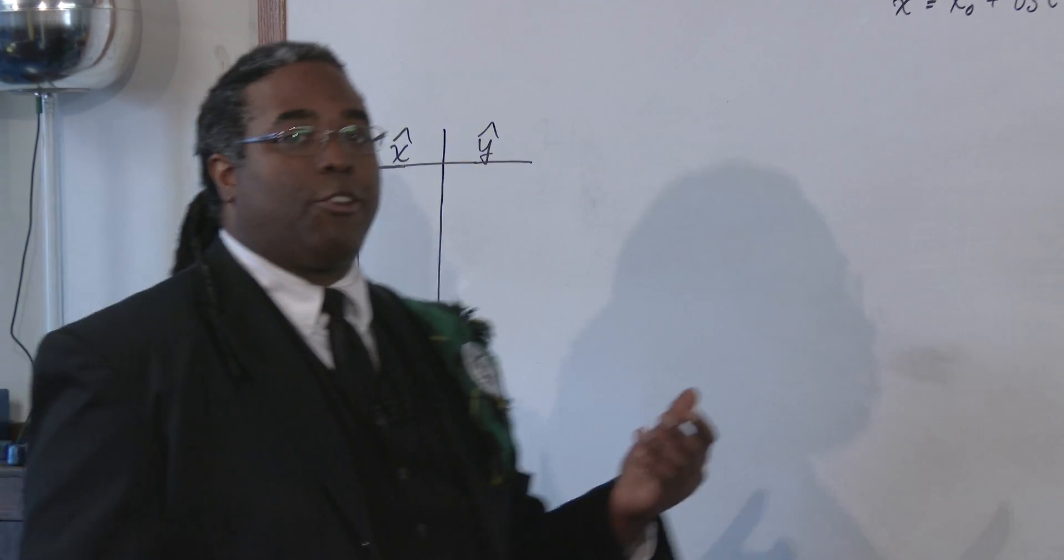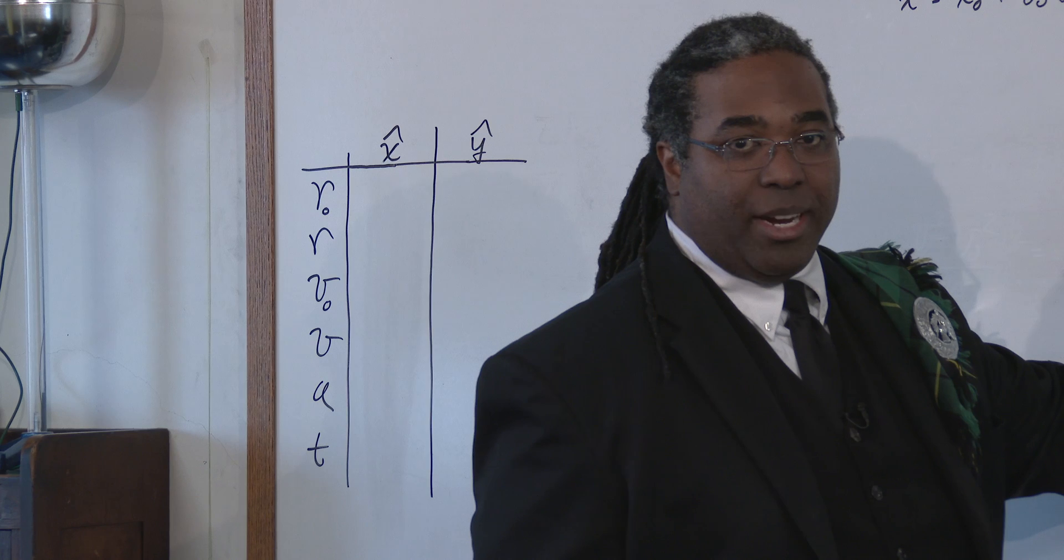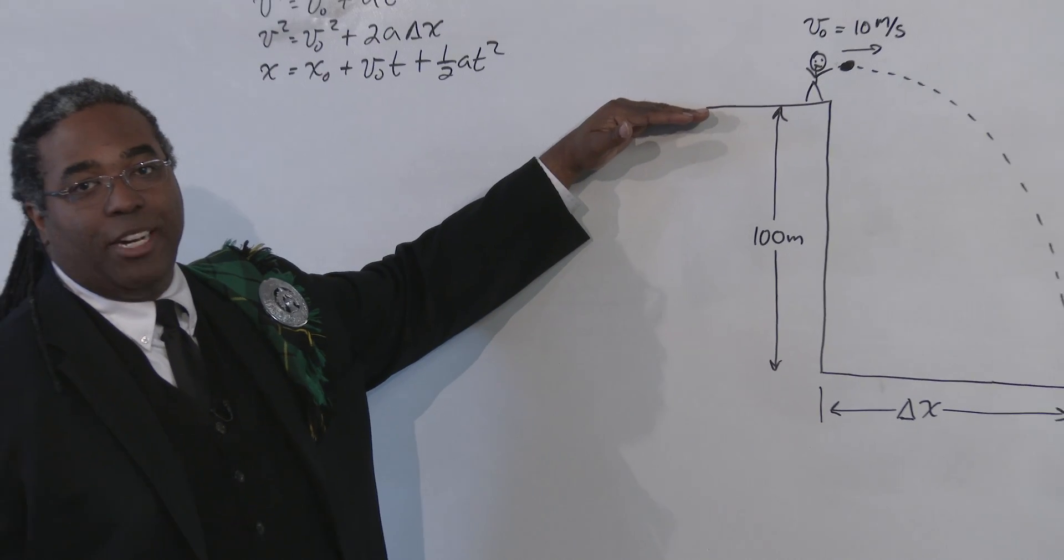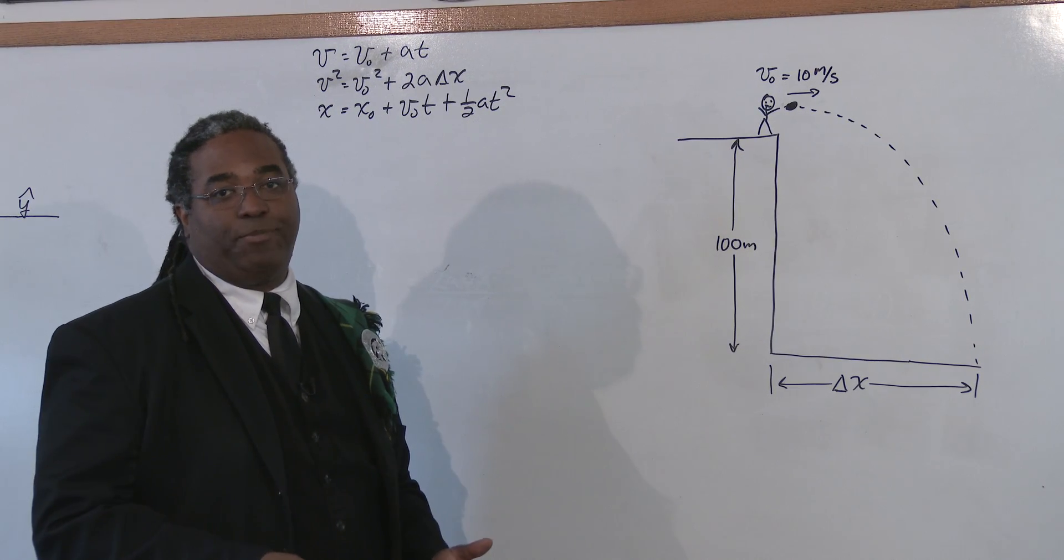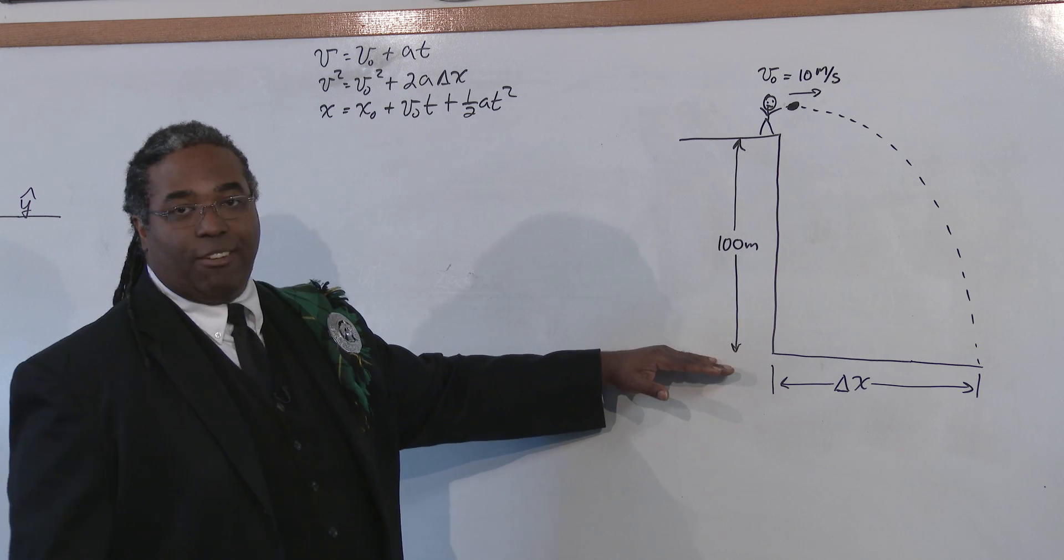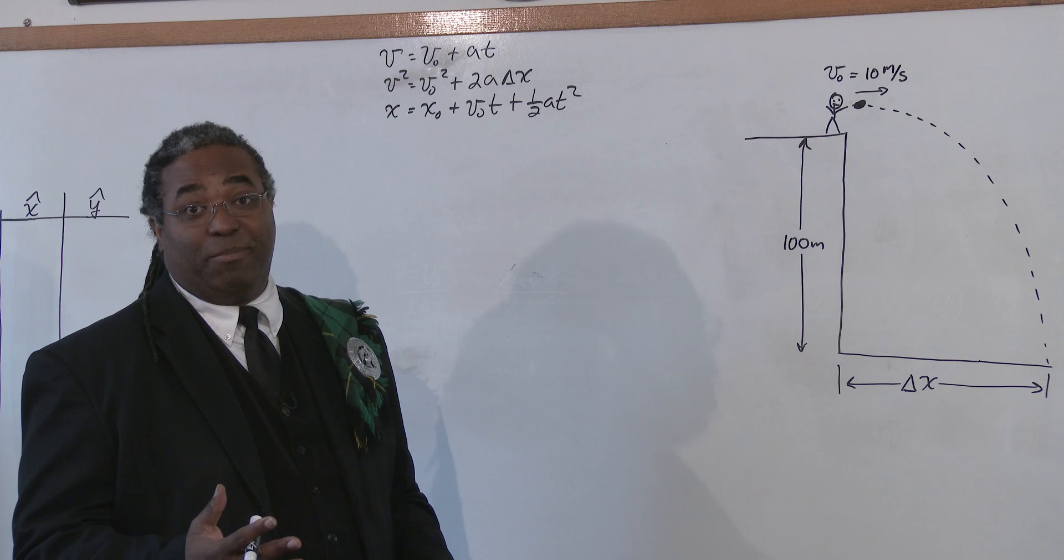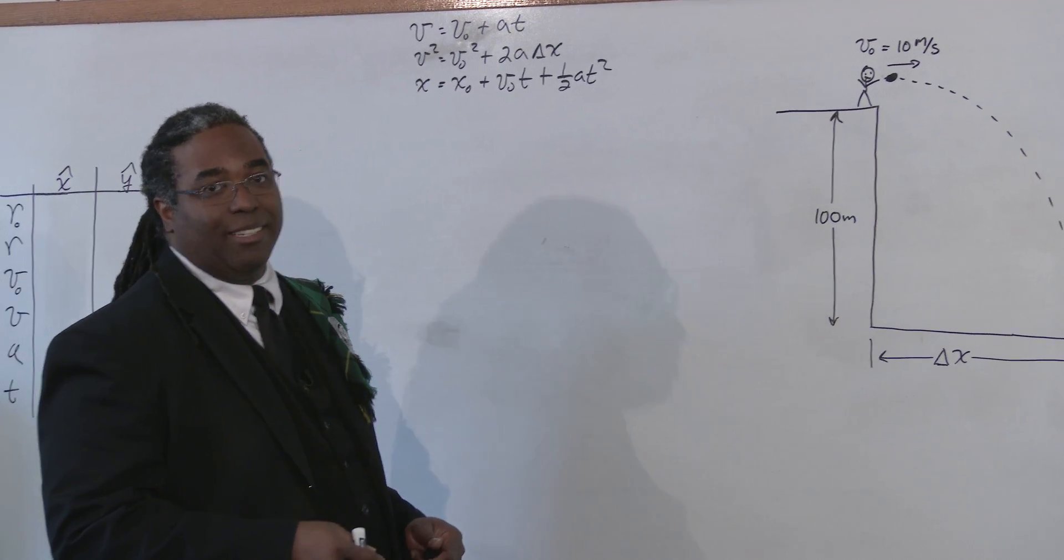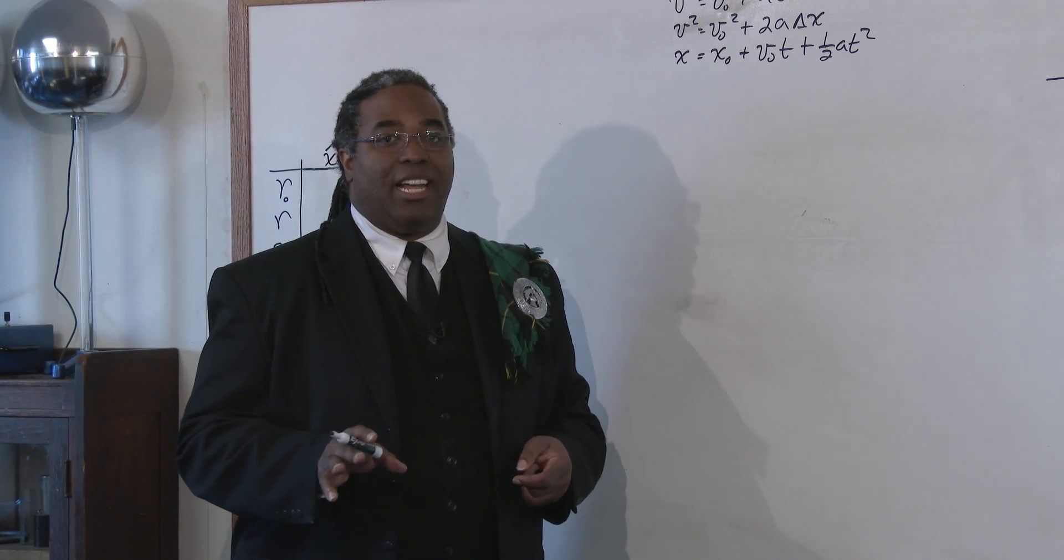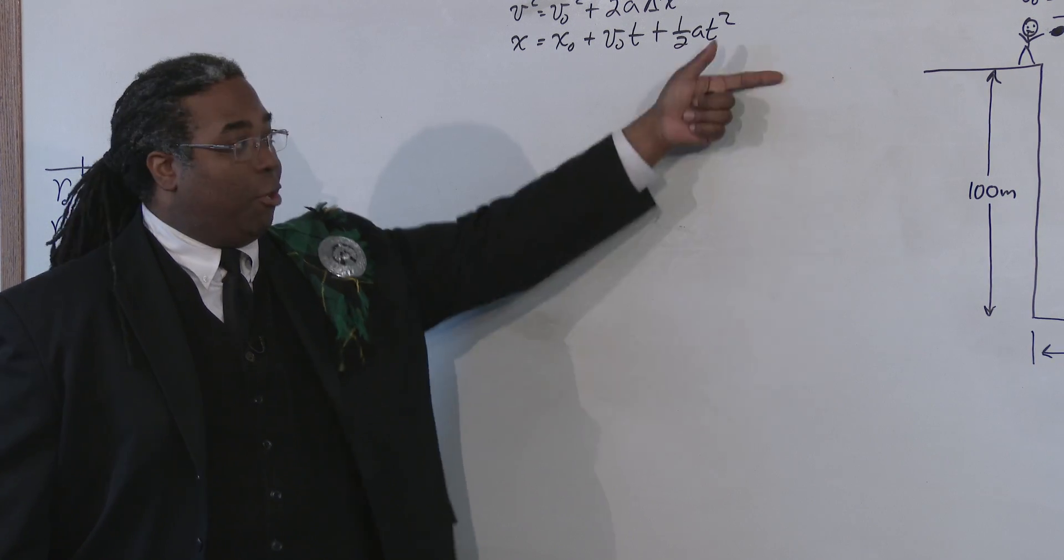So again, you can choose your coordinate system. You can choose this is zero and it falls a negative 100 meters or you can choose the ground is zero and it's elevated 100 meters above the ground. Either way works. Whatever you're most comfortable with. Me, I like to choose the ground is zero and it's elevated 100 meters. But sometimes, do what's uncomfortable. That's how you're always pushing the envelope of understanding. So let's just get out of our comfort zone for a second and we'll choose up here is zero and down here is negative 100 meters below zero.